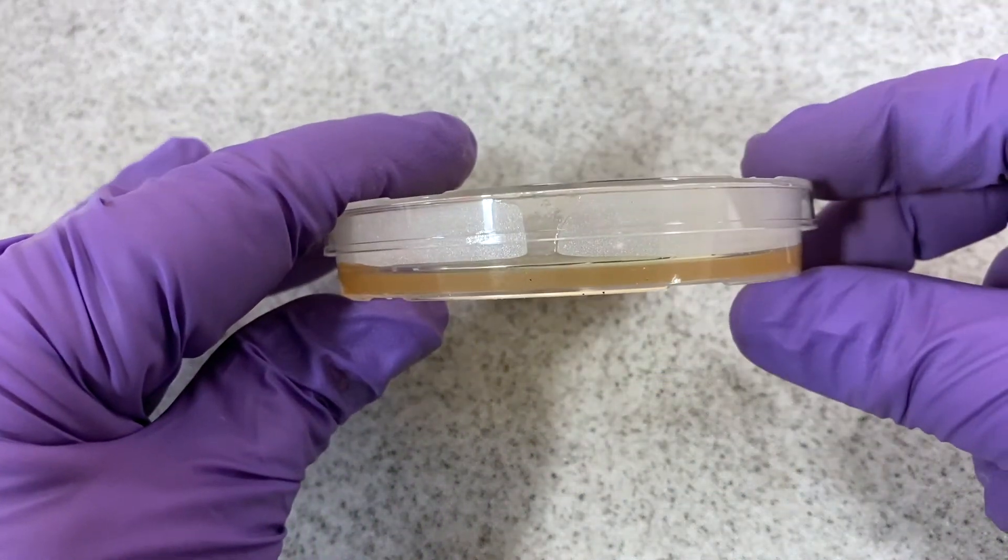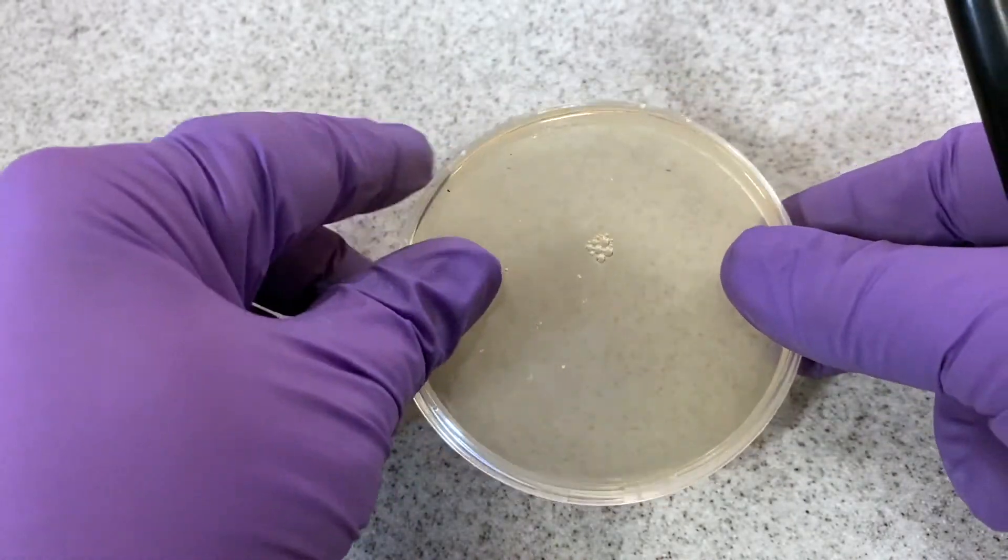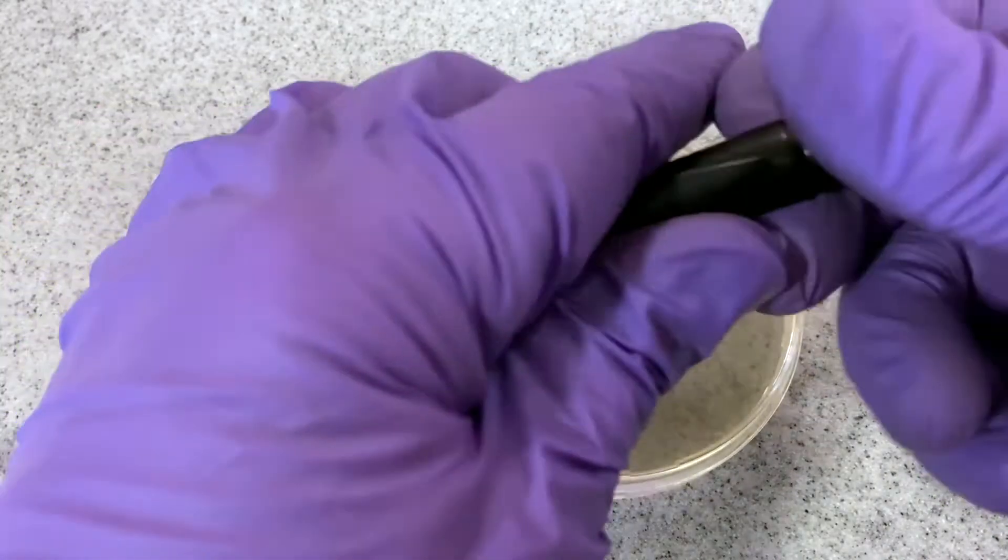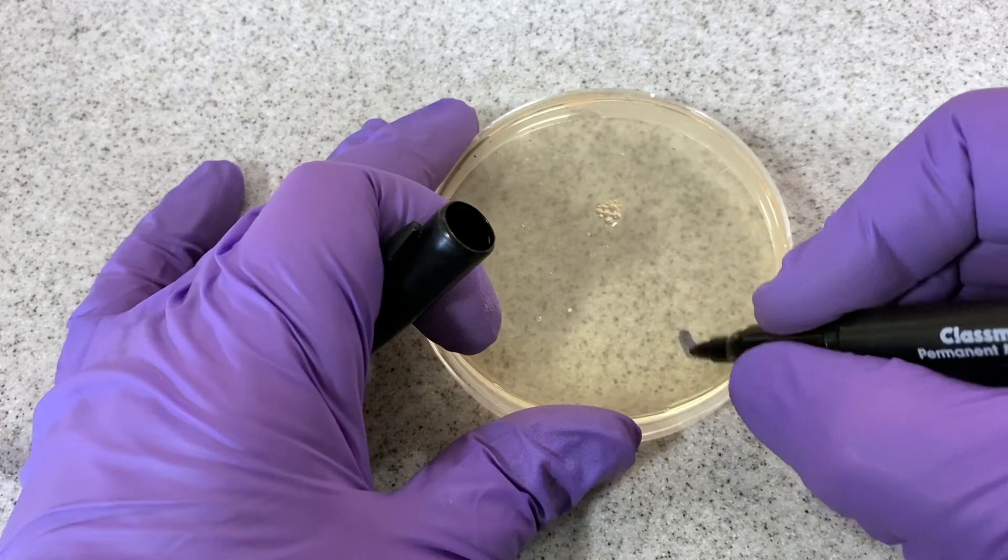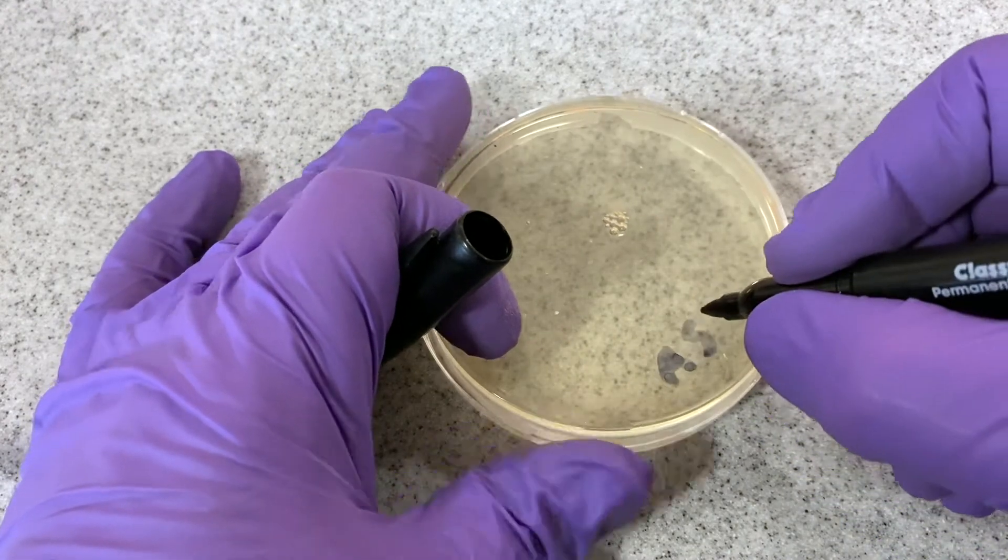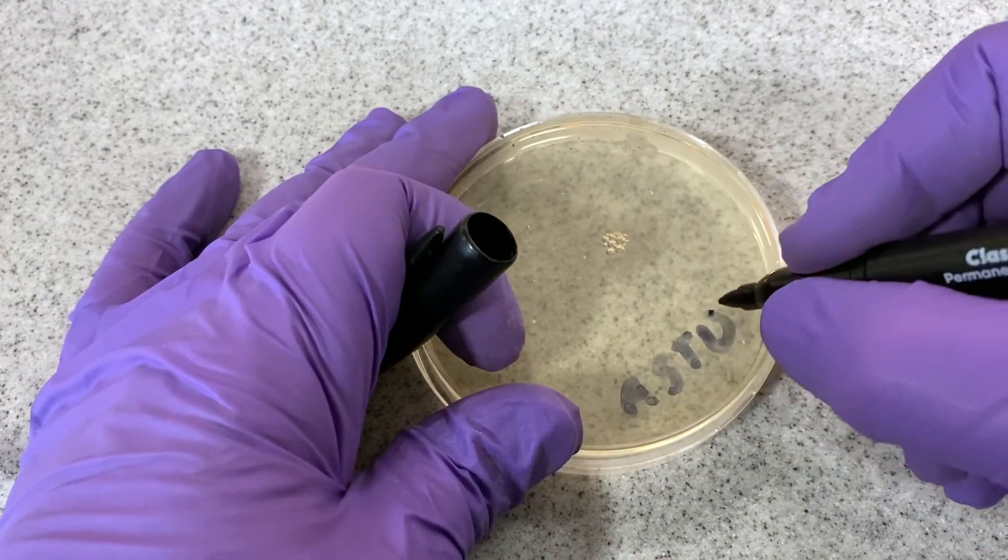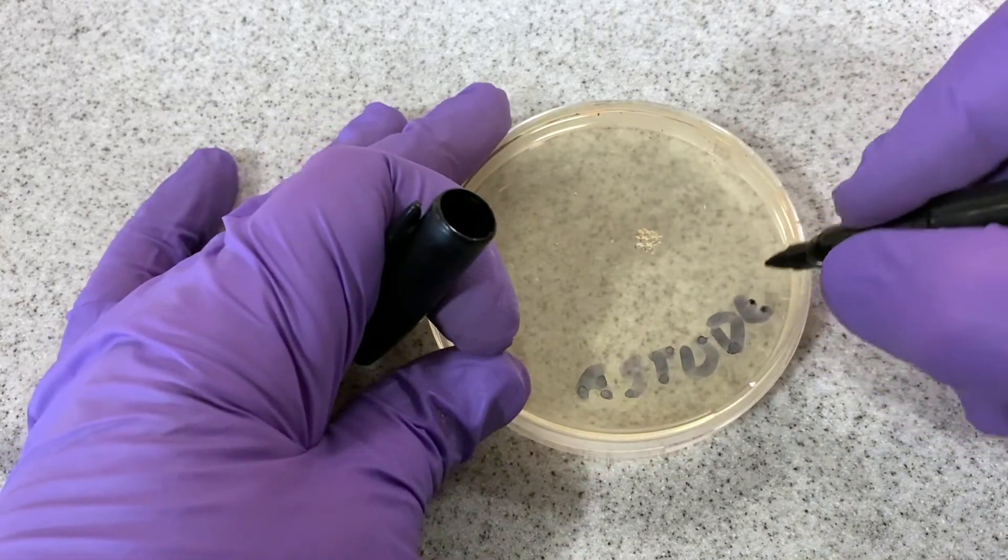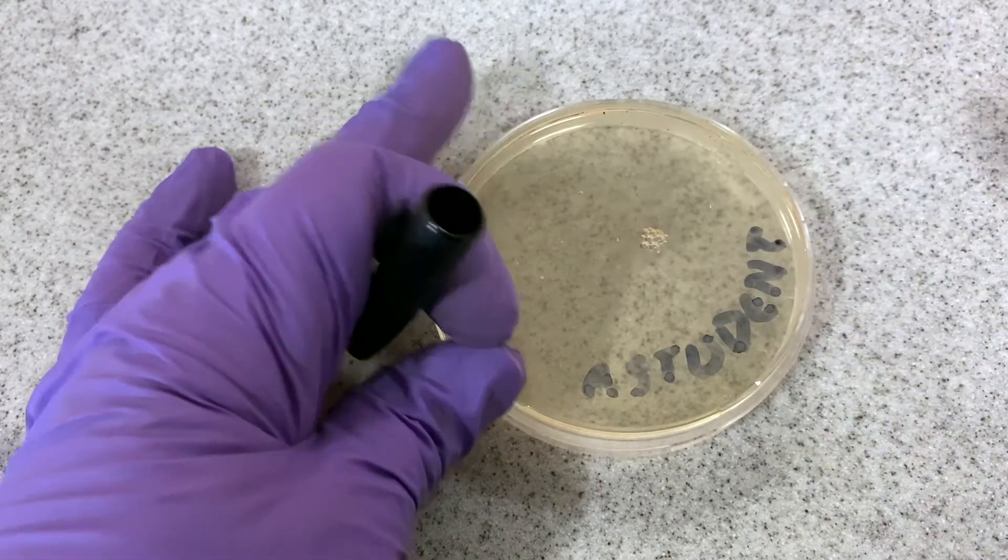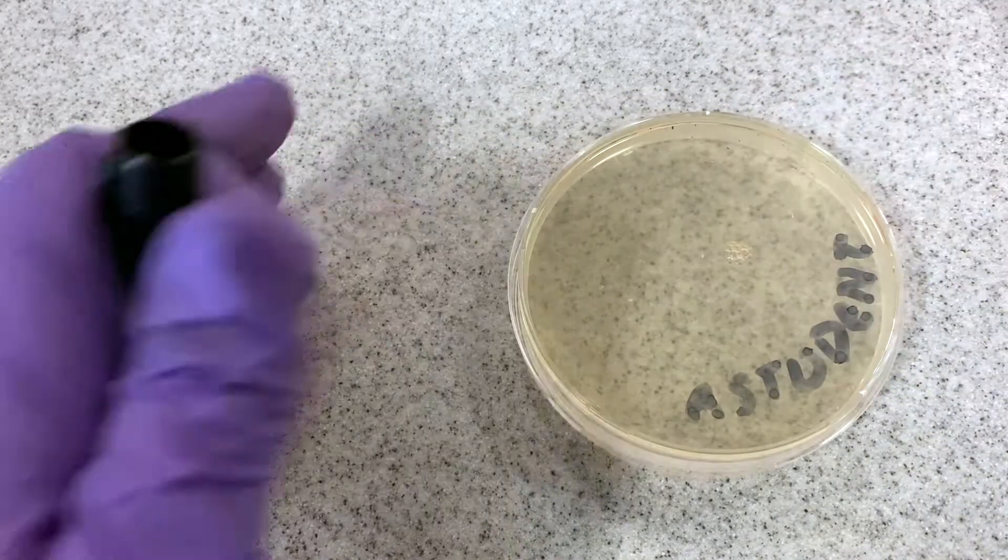On a cool laboratory bench, the agar medium takes around about 1 minute to solidify. Once it has become solid, the plate itself can be inverted and labeled. Always label the base of the petri dish containing the agar medium.